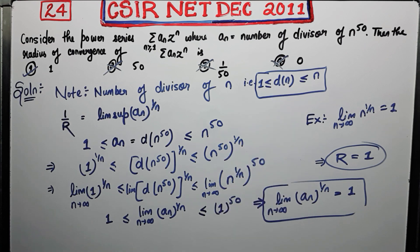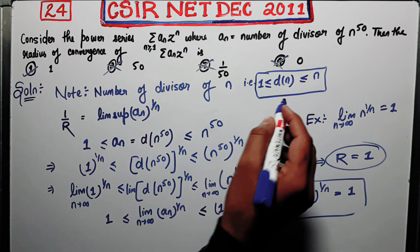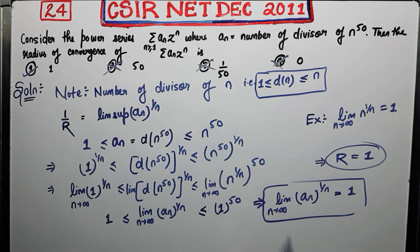The only thing required here is the obvious inequality: the number of divisors of n is always less than or equal to n. This bound helps us find the limit, because while we can compute divisors for small numbers like 2, 3, 4, 5, 6, 7, it becomes impossible as n → ∞. So this inequality gives us the bound we need. Please keep this inequality in mind. Thank you.